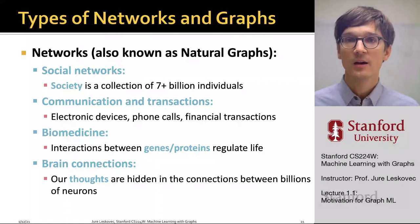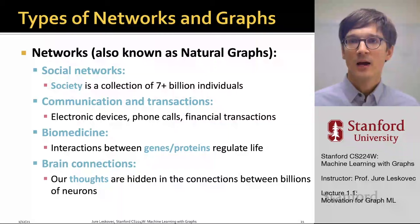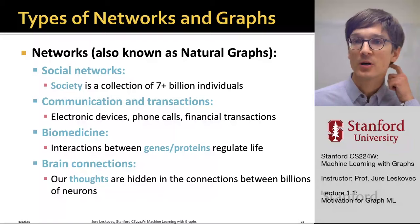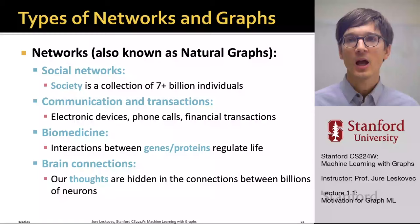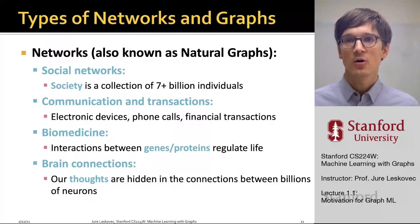There are essentially two big parts of data that can be represented as graphs. First are what are called natural graphs or networks, where underlying domains can naturally be represented as graphs. For example, social networks — societies of 7 billion individuals and connections between them — communications and transactions between electronic devices, phone calls, financial transactions, all naturally form graphs. In biomedicine, we have genes and proteins regulating biological processes, and we can represent interactions between these different biological entities with a graph. And connections between neurons in our brains are essentially a network of connections.